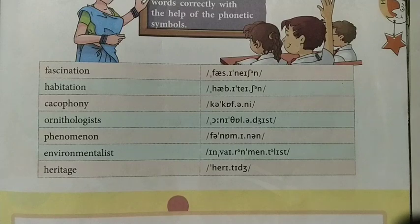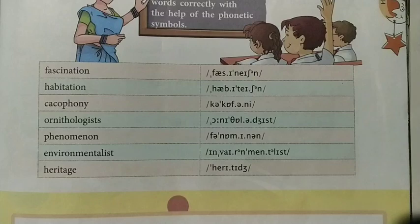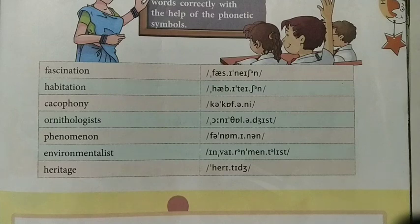The words to practice frequently are: fascination, habitation, cacophony, ornithologist, phenomenon, environmentalist, and heritage. This is your today's lecture for the book exercise of Lesson Number 1. I hope you will do these question answers in your notebook.